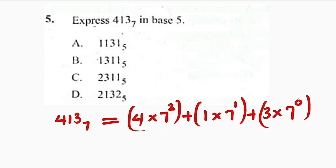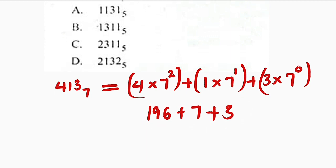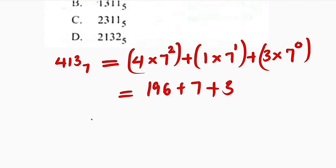Now let us simplify. From here, you can see 7 squared is 49, and 49 times 4 will give us 196. 196 plus 7 to the power of 1 is 7 times 1 is 7, plus 7 to the power of 0 is 1, and 1 times 3 is 3. You can see that 7 plus 3 is 10, and if you add 10 to this number, you are going to obtain 206. And hence, 413 in base 7 is equal to 206 in base 10.